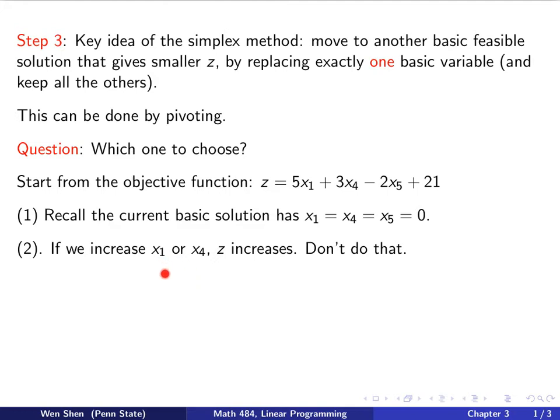If we shall move any one of them into a basic variable, then in the new basic solution, the value of x1 or x4, whichever you choose, might be non-negative. It could become strictly positive. So we will increase x1 and x4. In that case, then the z value will increase.